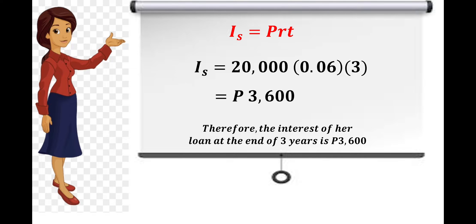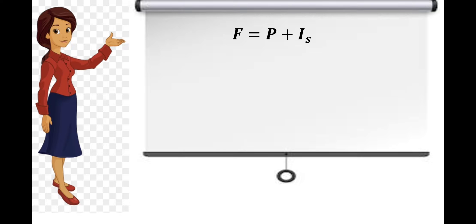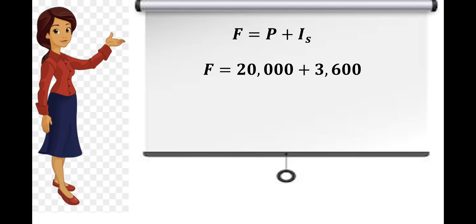Therefore, the interest on her loan at the end of three years is 3,600 pesos. For the future value, F is equal to P plus I sub S, wherein the principal is 20,000 pesos and the interest is 3,600. Adding these two, we have 23,600 pesos. Therefore, the future value is 23,600 pesos.